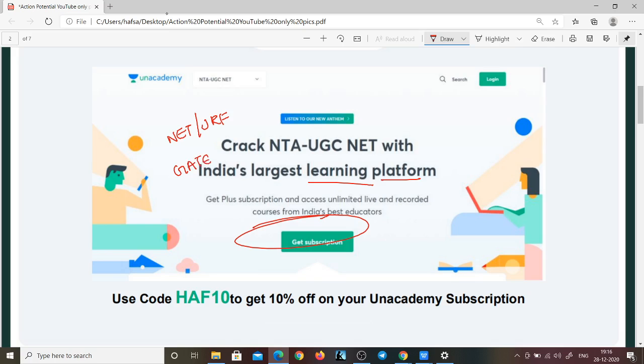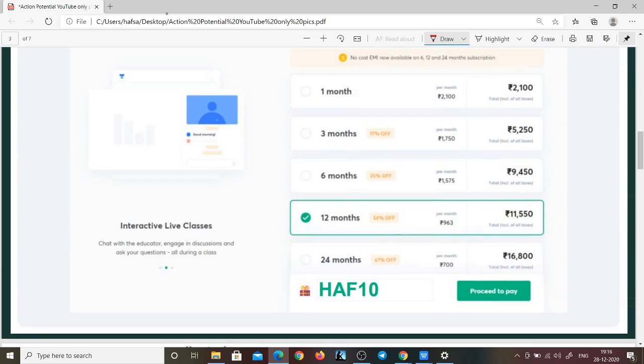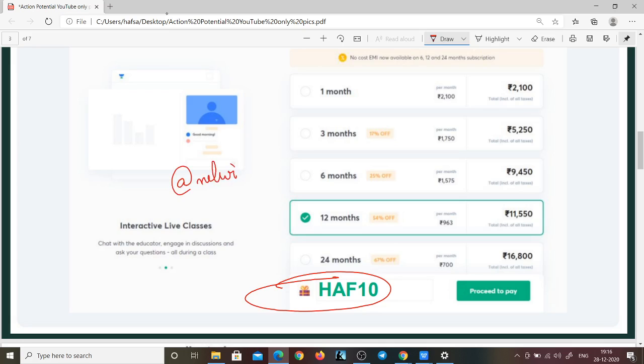You can make sure to clear, you can use my code HAF10 to get a full 10% off. You can also use your credits to get another 10% off and that sounds like a great deal, doesn't it? Unacademy is going to have a price hike, so you better go ahead and get your subscription. These are your various options. If you have any doubts, you can message me here on YouTube, you can message me on Unacademy, or you can join my group. It's called NET with Hafsa. This is a Telegram group, by the way.